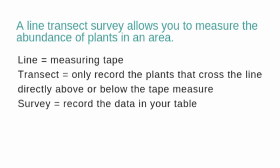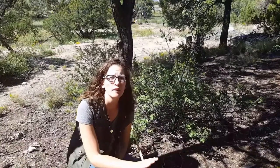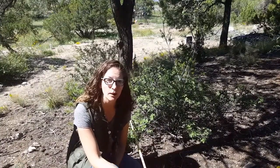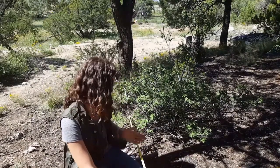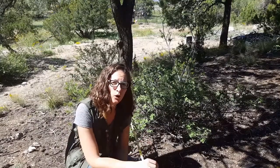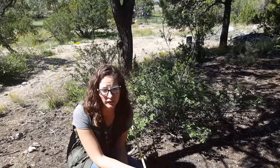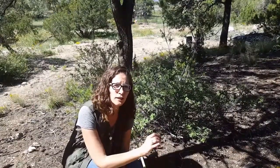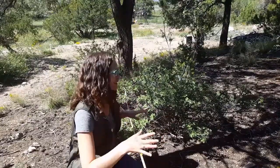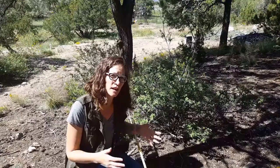The purpose of a line transect survey is to measure overall abundance of different types of plants. We have our seven habits that we're looking at, and at each meter point we're going to see what type of plant transects the line and record the data. We're in a somewhat forested area here, and then we're going to do it in a meadow and compare the abundance of plant habits in those two areas.